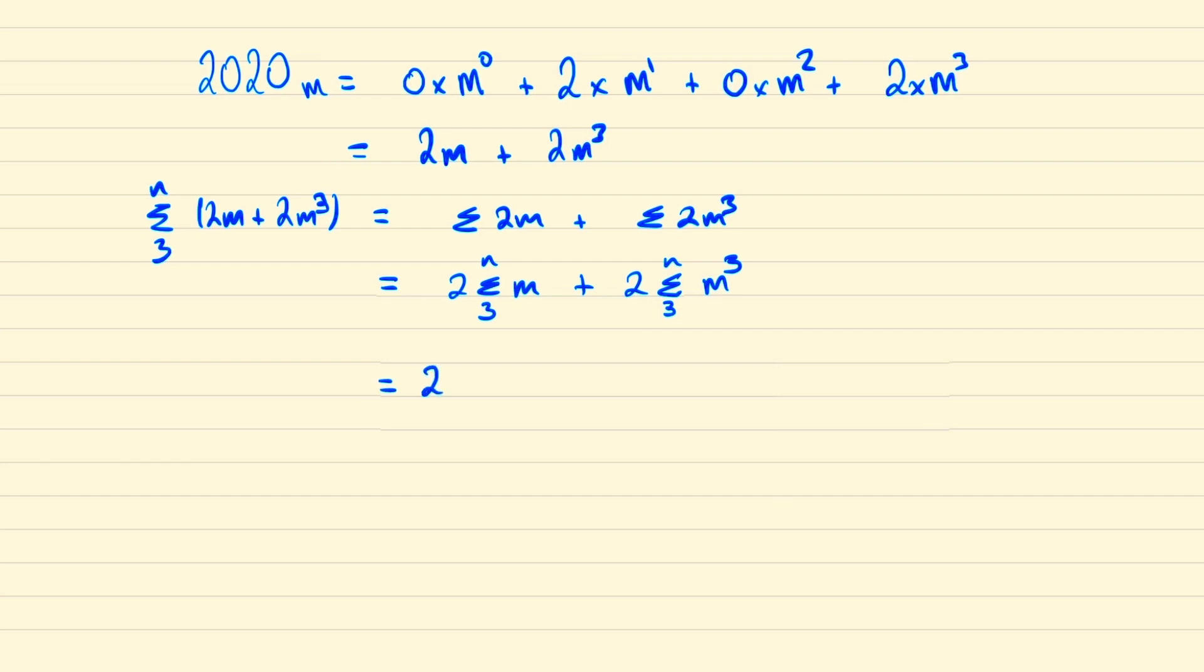So we can write this as 2 lots of n times n plus 1 all over 2 minus 1 minus 2. And we can do the same thing with m cubed so we can sum that from 1 to n which is n squared times n plus 1 squared all over 4 and then minus 1 cubed minus 2 cubed.